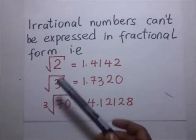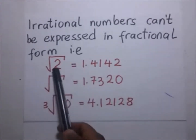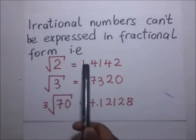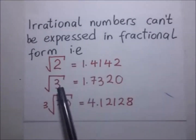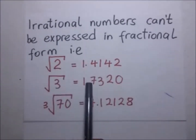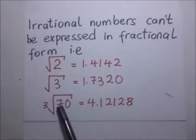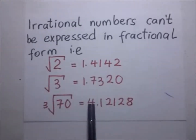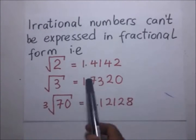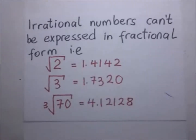Some examples of irrational numbers are shown here: the square root of 2, the square root of 3, and the cube root of 70. Looking at these numbers, we see that they are infinite and non-recurring decimals.